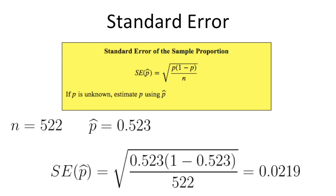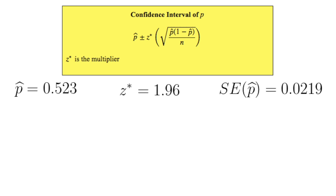Now we have all the values that we need to construct our 95% confidence interval. We can plug these values into the formula, and we get 0.523 plus or minus 1.96 times 0.0219.